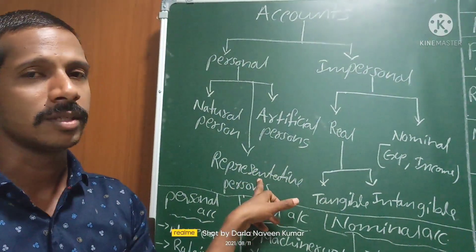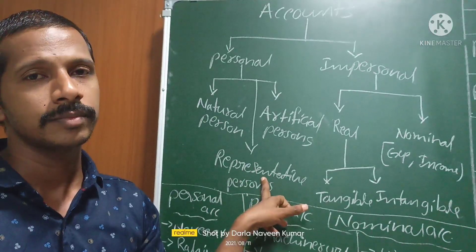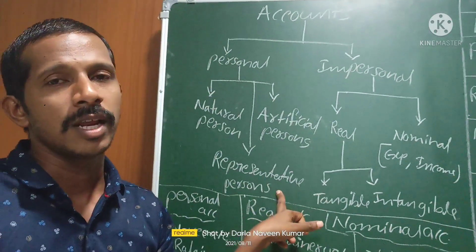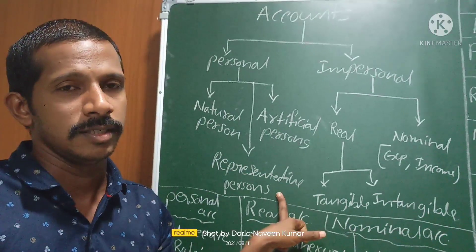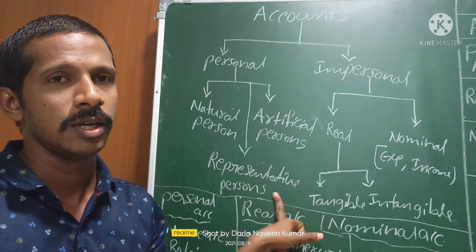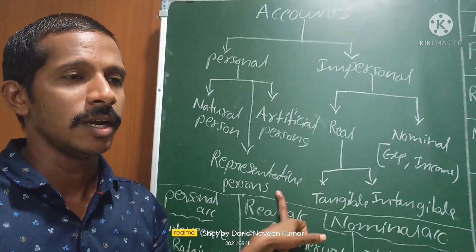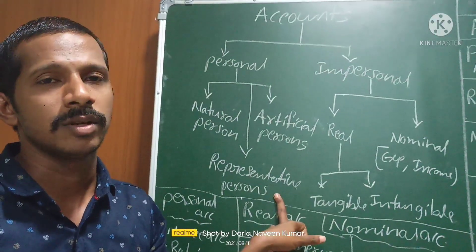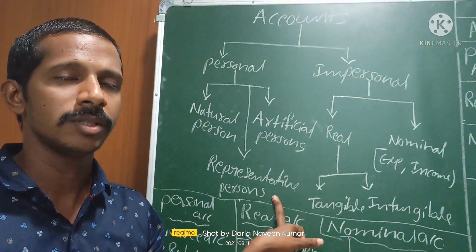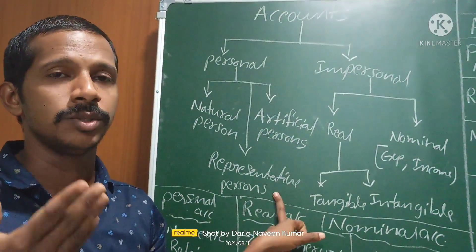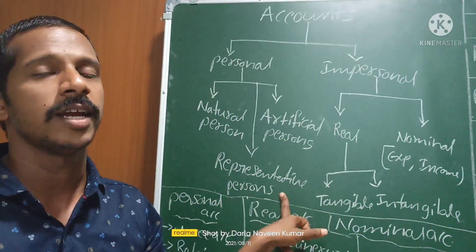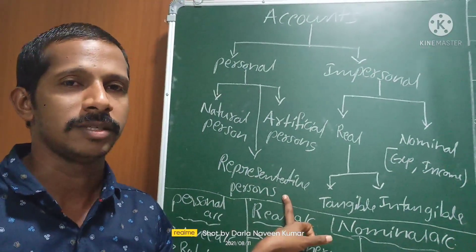Representative persons means amounts like advances, payables, or dues. It is not a person, but it is related to persons only — amounts dues, amounts receivables, prepaid insurance, outstanding wages. These things we treat as representative persons.